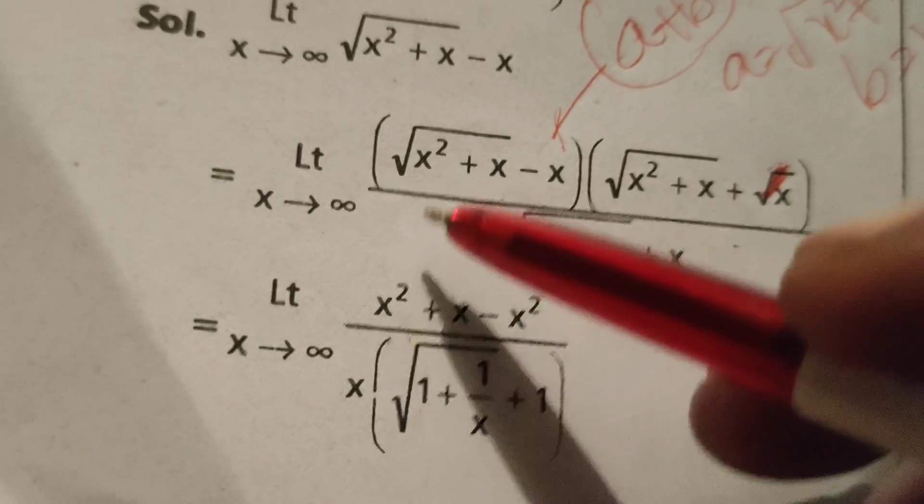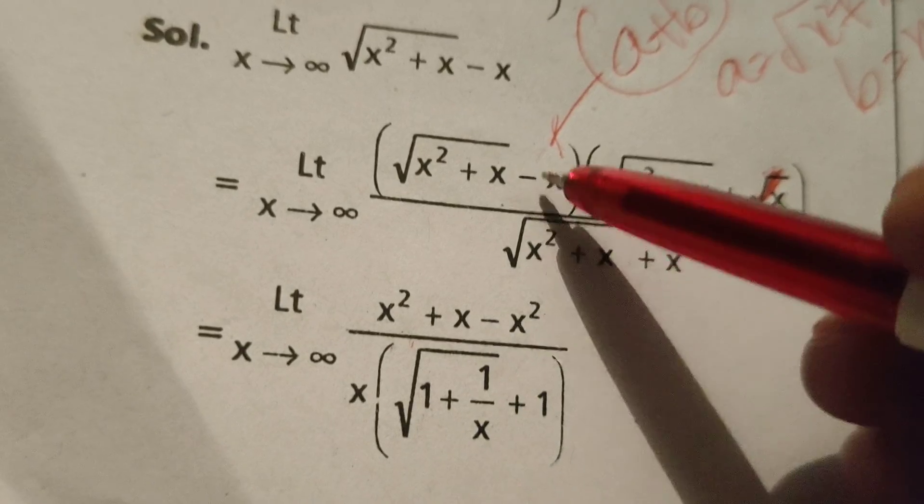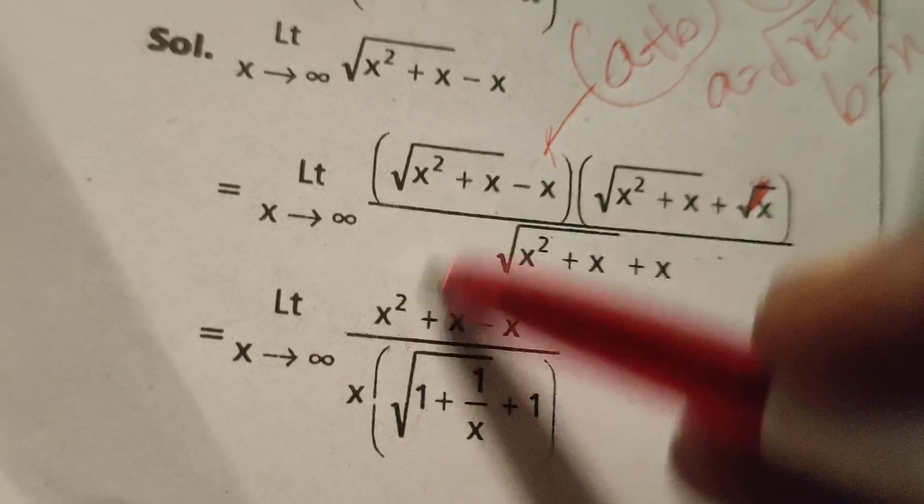Therefore x square plus x minus x square. Here root square gets cancelled.